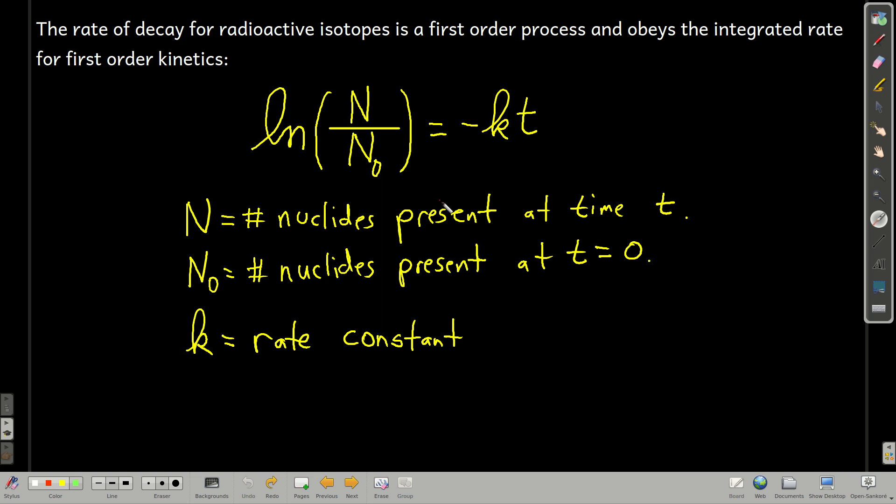Radioactive isotopes, when they decay, obey a first order rate law, just like we saw back when we first started talking about kinetics. The natural log of the number of nuclides present at time t, over the initial number of nuclides present at t equals 0, is equal to negative k times t. t is the time, and k is the rate constant. So for first order kinetics, we can use this equation, a nice simple one.